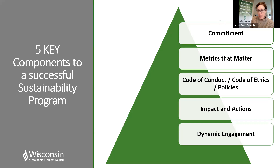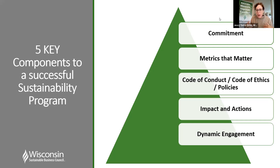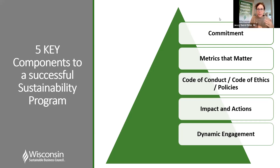The third is a code of conduct. Different companies organize this differently — sometimes it's an ethics code, sometimes a supplier code of conduct, or it could look like policies in the organization. These pieces help work through the integration piece and help you state and formalize what your organization does in each of the different categories — through purchasing, supply chain, or just as an employee code of conduct — adding sustainability to the different layers of your organizational structure.